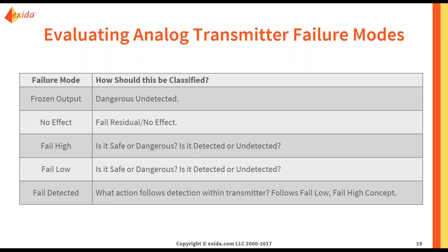The ones that we are unable to classify without knowing your system are fail high, fail low, and fail detected. For fail high, we don't know if it is safe or dangerous, detected or undetected. The same with fail low. With fail detected, your transmitter detects that you have an internal failure and it is driving your output either high or low, just like a fail high or fail low might. It follows the same concept depending on how you configure your system.